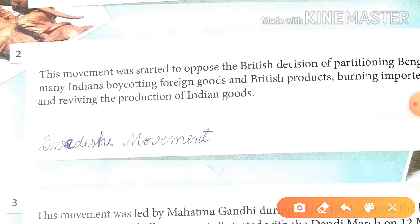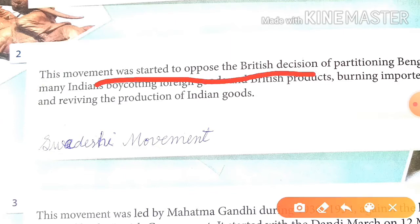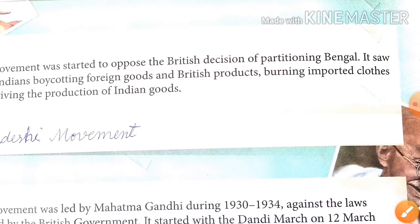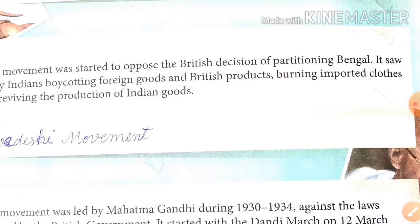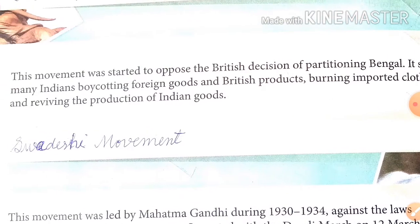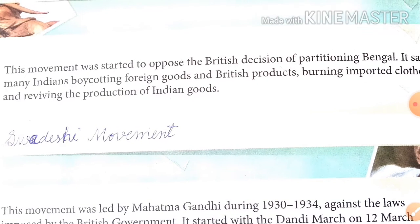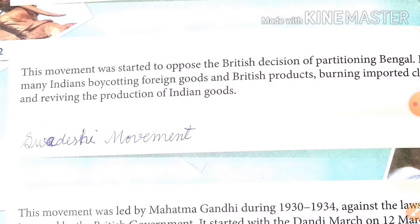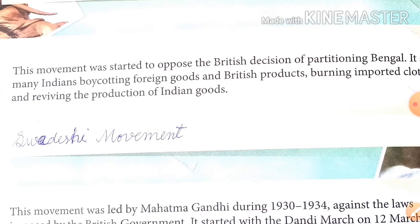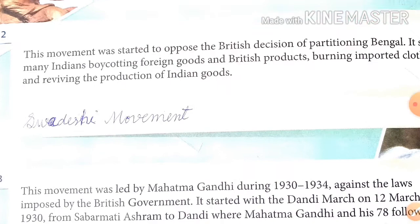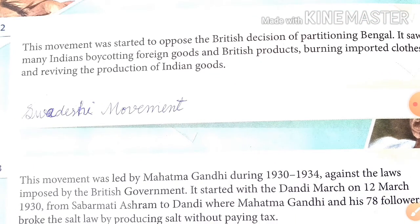Second point ka answer hai: Swadeshi Movement. Kaun sa movement tha? Swadeshi Movement tha. Is movement ko Bengal vibhajan ke British faisale ka virodh karne ke liye shuru kiya gaya tha. Aur isme India mein jo videshi vastuvein thi aur British bahar ke deshon ke products the, unka virodh kiya gaya aur imported kapde jalaye gaye.